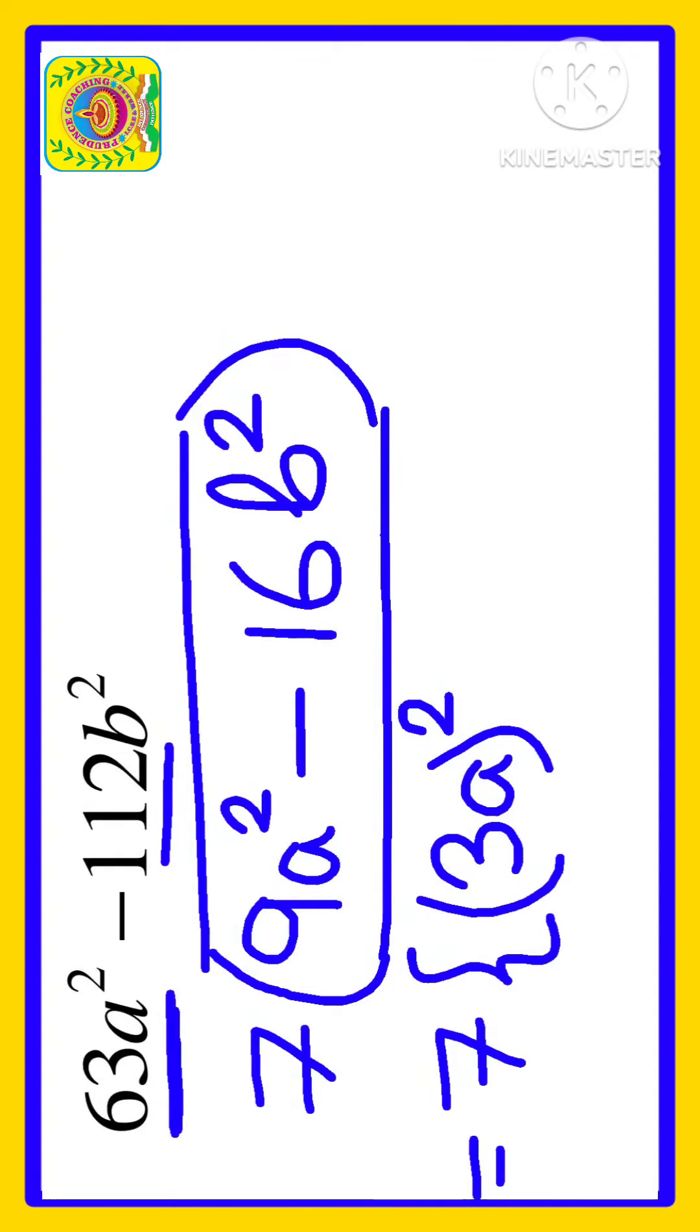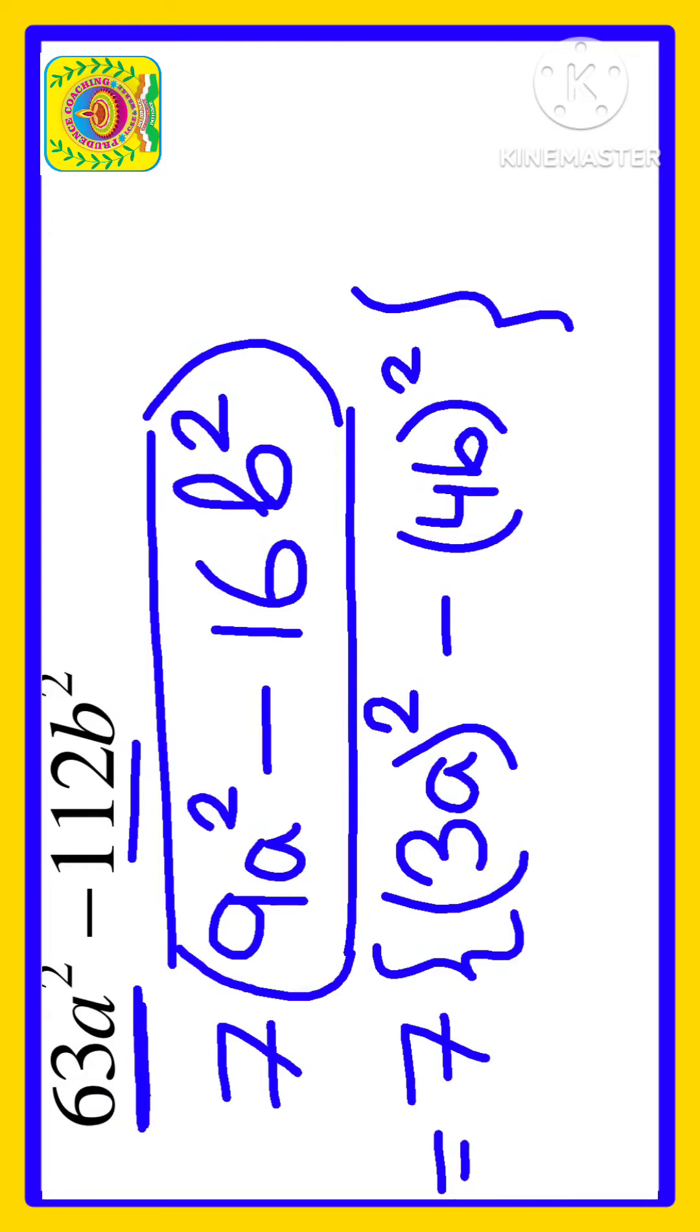3 × 3 = 9 and a² is a². Here we have 16, so 16 means 4². 4 × 4 = 16, and we have b, so (4b)². We can write it like this. Now we are going to apply the identity a² - b² equal to